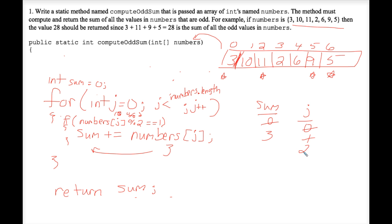J plus plus is now the two, which means we're looking at the eleven. Since eleven mod two is indeed a remainder of one, we add the eleven into the running total of sum. And I think you see the pattern here. It's up to fourteen. We will end up exhaustively adding up the nine and the five.